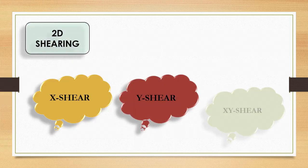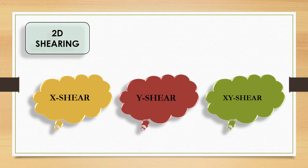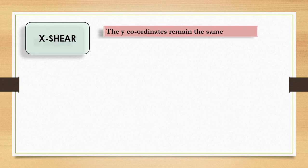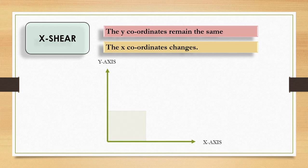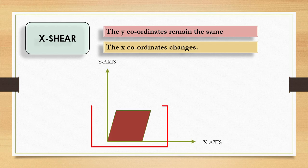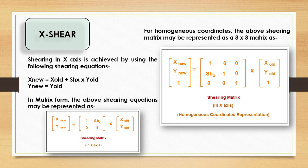2D shearing can be performed with X shear, Y shear, and XY shear. In X shear, the Y coordinate value remains the same but changes to the X coordinate value happen. Consider this is the X axis, this is the Y axis — this is the 2D object which we are going to slant, and the slanted object will look like this.